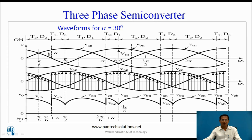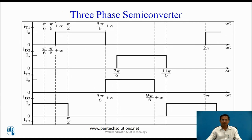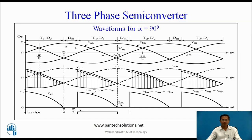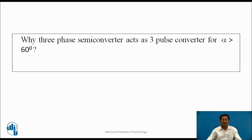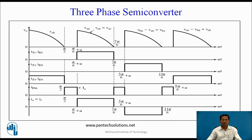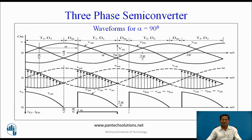For one complete cycle, 6 pulses appear across the load, which is why the converter acts as a 6-pulse converter. These are the waveforms for α = 90 degrees — the mode is the discontinuous conduction mode. The three-phase semi-converter acts as a 3-pulse converter for α greater than 60 degrees. If α > 60°, for one complete cycle, 3 pulses appear across the load, which is why the converter acts as a 3-pulse converter.